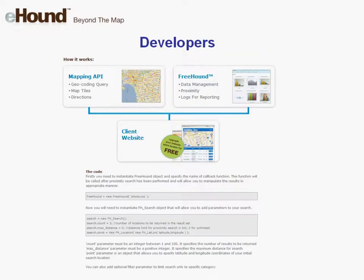Developers will be interested in Freehound. As the name implies, Freehound is a set of tools to help developers build store locators rapidly. Freehound is made up of a free proximity API and a free location address data management tool. Using Freehound, developers will be able to rapidly build and deploy a locator, whether it's for a website or on a mobile. By using the data management tool, you can quickly upload some address data, geocode it and then make proximity API calls against the data.